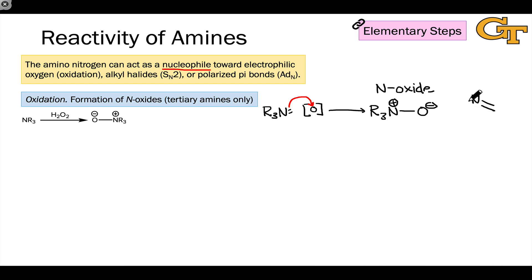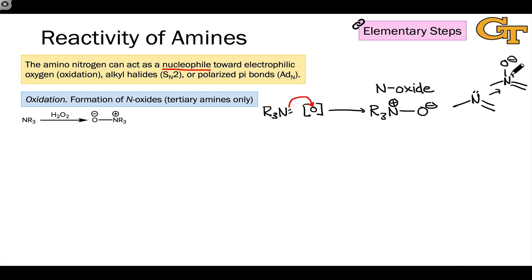Pyridines are heterocycles containing a nitrogen atom. These can also form N-oxides, and in the case of pyridine the nitrogen is positive and the oxygen is negative — analogous to the behavior of tertiary alkylamines.